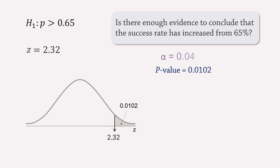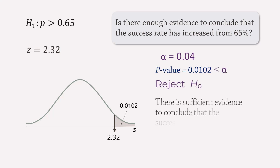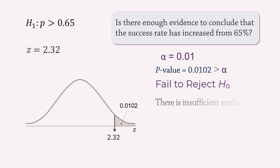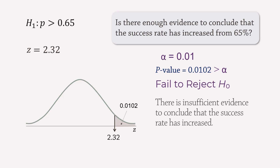If alpha equals 0.04, we will again reject the null hypothesis since this p-value is less than alpha, and we will conclude that the success rate has increased. But if alpha were 0.01, we will fail to reject the null hypothesis since this p-value will be greater than alpha. That is, at alpha equals 0.01, there is not enough evidence to conclude that the true proportion is greater than 0.65.